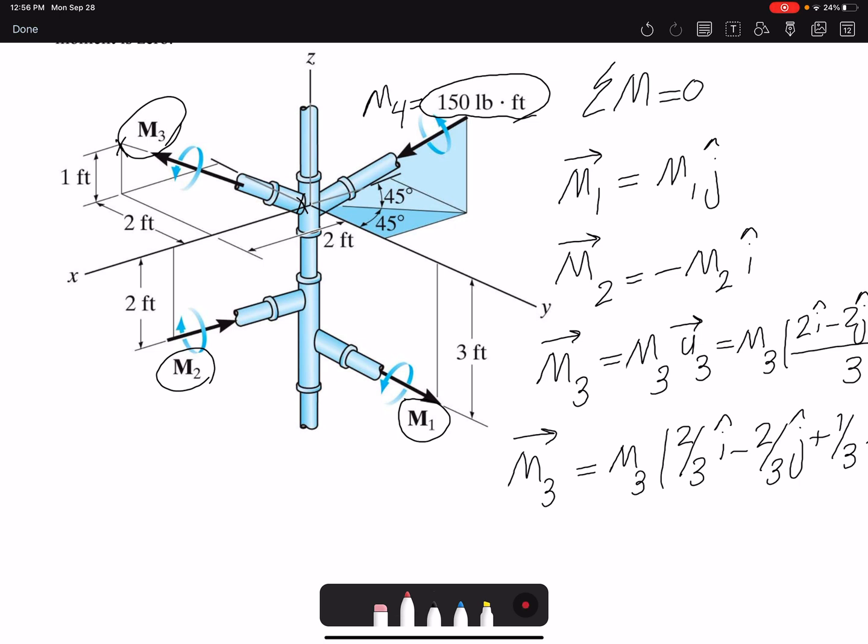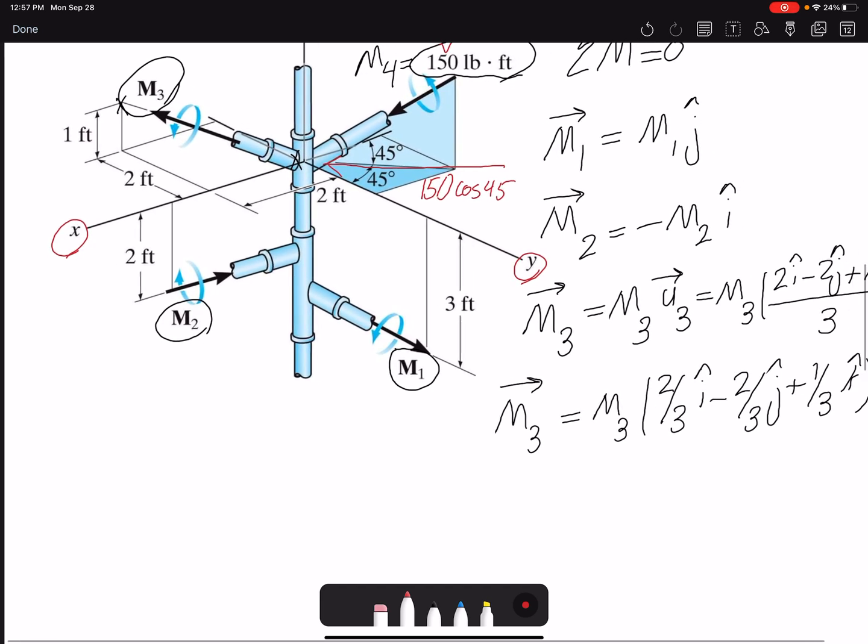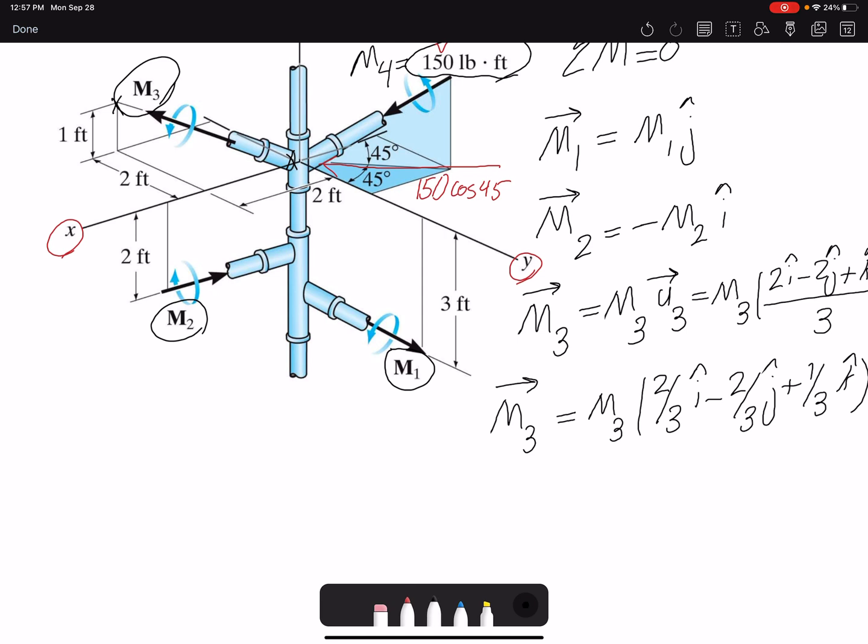So if this would be M4, the projection on xy plane on y and x, this projection would be 150 cosine 45 - that's the angle that our moment is making with its shadow on xy plane. And then once I have it on xy plane, I can use the other 45 degree angle to find the other components.